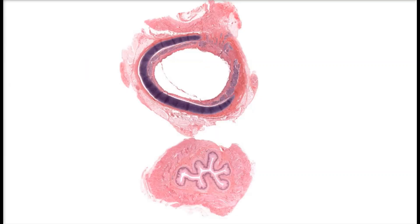Our last type of simple epithelium is called pseudostratified columnar epithelium. Pseudo means false, and stratified means layers — so this type of epithelium is falsely layered. It looks like it has multiple layers of cells, but in actuality it's just a single layer. Columnar tells us that the cells are tall and rectangular.